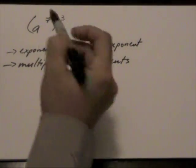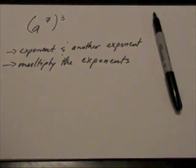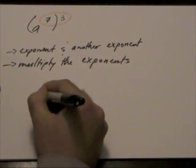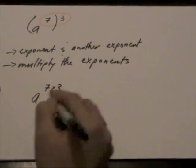And this is what we call the power of a power. So, if we do that in this example, we're multiplying the 7 by 3. We're going to keep the base. We're going to multiply 7 by 3.